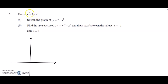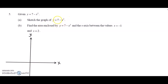Given y equals 7 minus x squared, we need to sketch this graph. We have our x-axis and y-axis. We know that y equals negative x squared is a parabola passing through the origin at its maximum point. Now with negative x squared plus 7, the graph shifts up 7 units, so it passes through y equals 7.